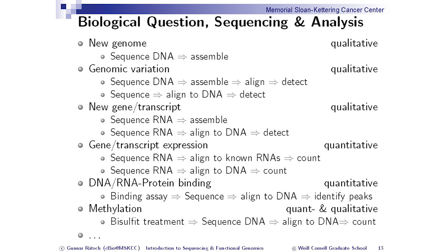It's important to keep in mind what the goal is and what kind of analyses are necessary for this type of data. If you're interested in sequencing a genome you sequence the DNA and do assembly. For genomic variation, you sequence DNA, align it to a reference genome, and detect differences to find variants. If you're interested in finding new genes or transcripts, you sequence the RNA, assemble it, or align it to the DNA and detect what transcripts might be there. This is all qualitative.